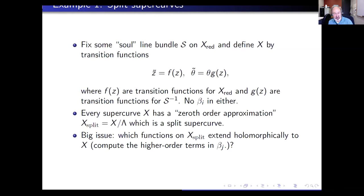Split super curves are important because every super curve has a zeroth-order approximation which is a split super curve — you get it by quotienting out by the nilpotent ideal, i.e., setting all the beta parameters to zero. One of the big issues that will reappear throughout this talk is: which functions on the split super curve that are independent of the betas can be extended to holomorphic functions on a general super curve? They need to be augmented by higher-order terms in beta, and unfortunately not every function on the split super curve will extend this way in general, which causes many problems.